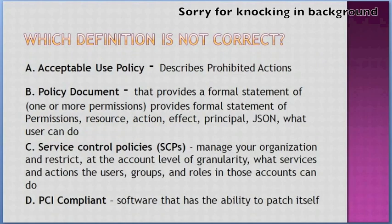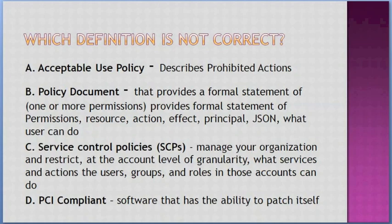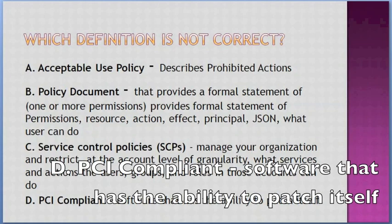Which definition is not correct? A. Acceptable Use Policy — describes prohibited actions, B. Policy document that provides a formal statement of permissions including resource, action, effects, principal, JSON, etc. — what users can do, C. Service Control Policies — manages your organization and restricts at the account level what services and actions users, groups, and roles in those accounts can do, D. PCI-compliant software that has the ability to patch itself. Answer: D — PCI-compliant software that has the ability to patch itself.